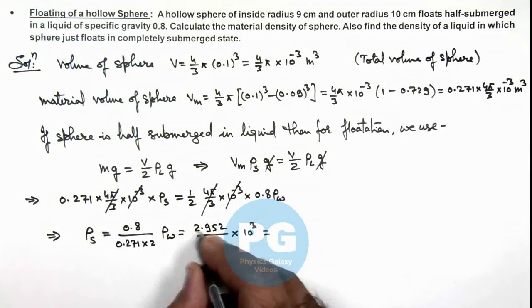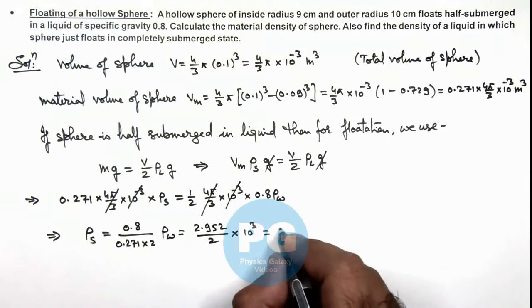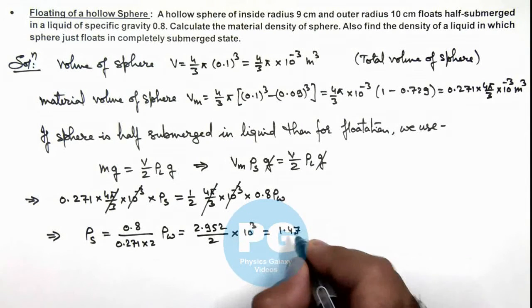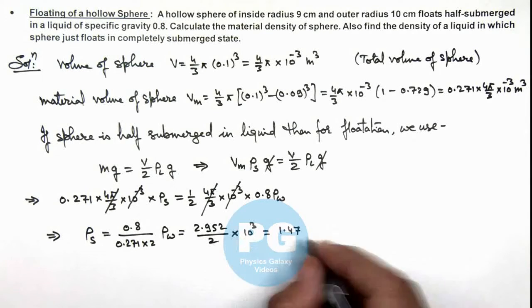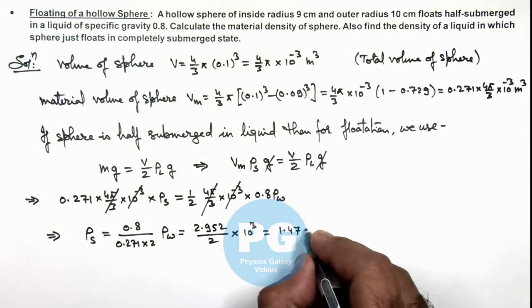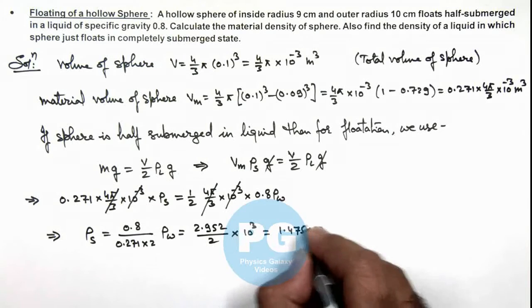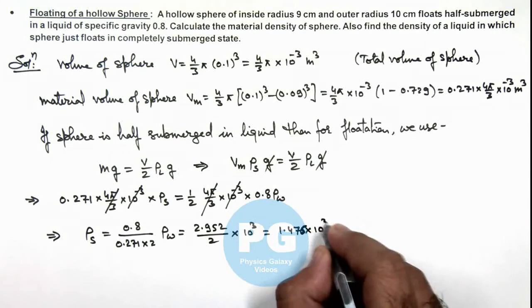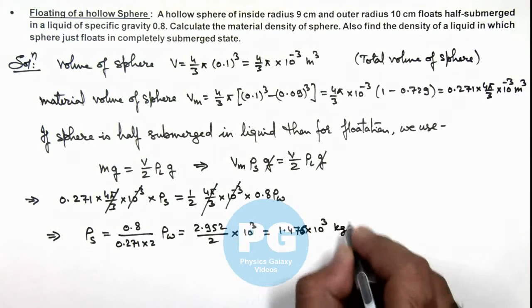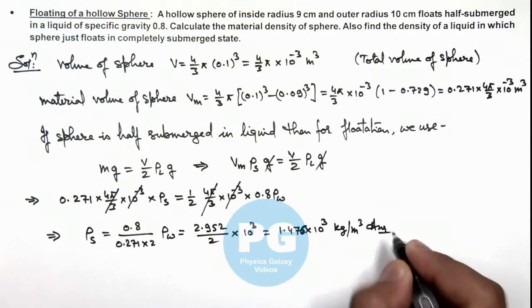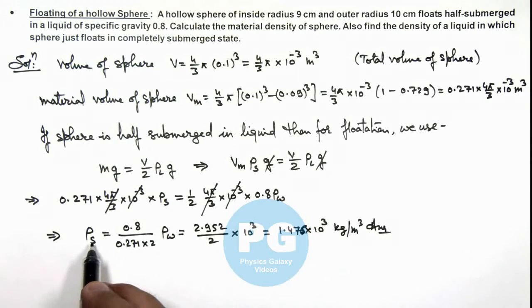Numerically this gives us approximately 1.476 into 10³ kilogram per meter cube, which we can write as approximately 1476 kg/m³. This is the first result of the problem, that is the density of the material of the sphere.